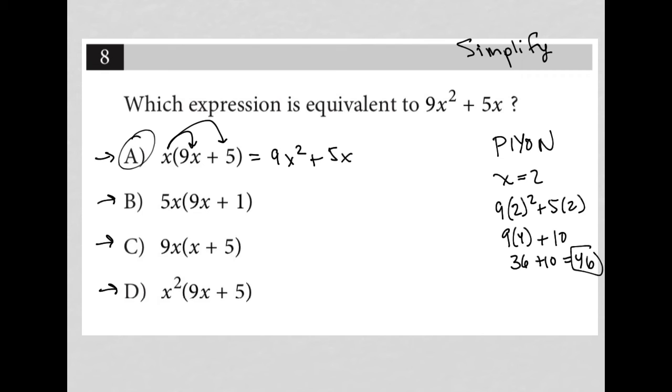And then I go from there and plug that same x equals 2 into my answer choices. So here will become 2 times 9 times 2 plus 5, which is equal to 2 times 18 plus 5, which is equal to 2 times 23, which is equal to 46.